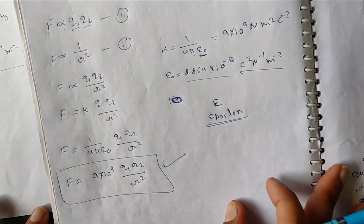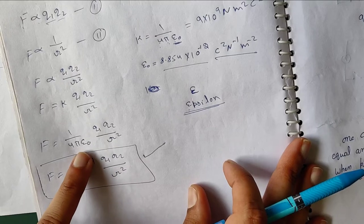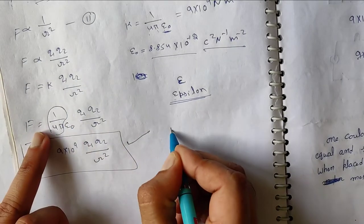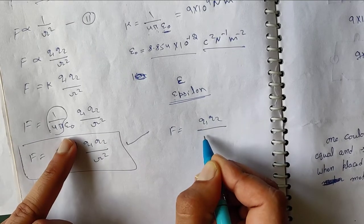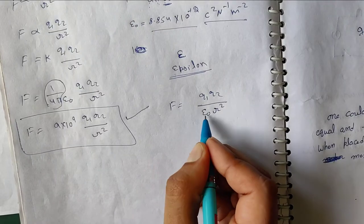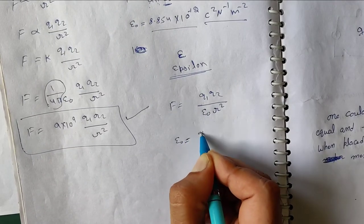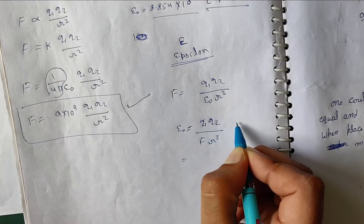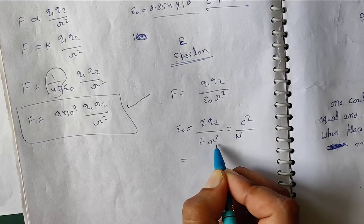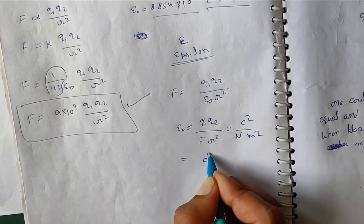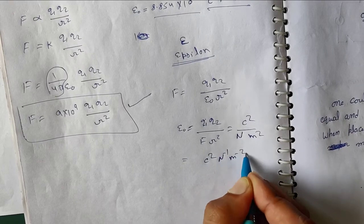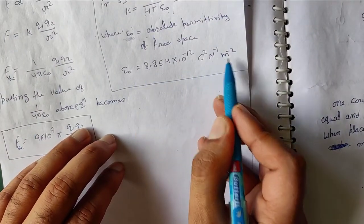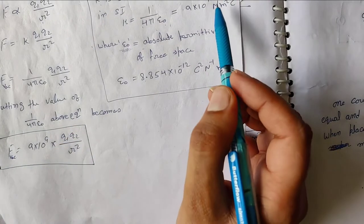Next is how to find the units of ε₀ from the expression F = 1/(4πε₀) × Q1×Q2/R². Since 4 and π are constants, we are left with ε₀ = Q1×Q2 / (F × R²). Substituting units: charge in Coulombs, force in Newtons, distance in meters — gives us Coulomb square per Newton per meter square. Similarly, you can find the units for K.